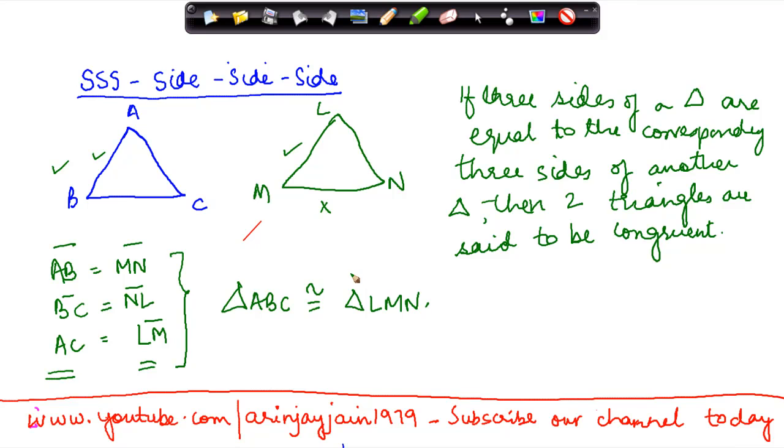So what you need to do is, whenever you are given any problem, you should draw the three sides of both triangles and try to check for yourself whether the three sides of one triangle are equal to the corresponding three sides of the other triangle. If they are, then the two triangles are said to be congruent. I am going to make you understand this through a problem.